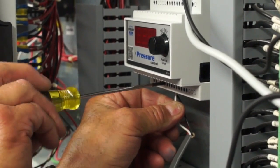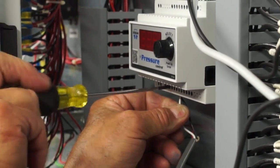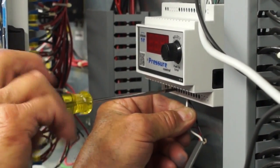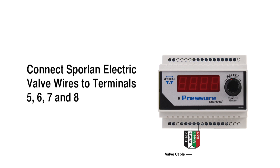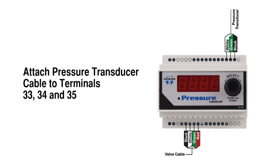Connect the Sporlin electric valve wires to terminals 5, 6, 7, and 8, matching the colors shown in the wiring diagram. Attach the pressure transducer cable to terminals 33, 34, and 35, matching the colors shown in the wiring diagram.